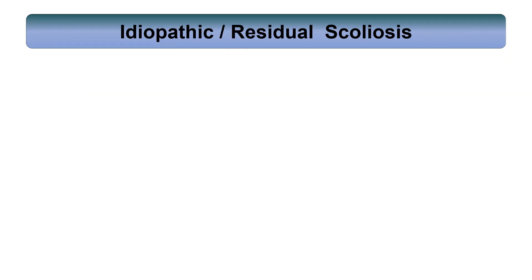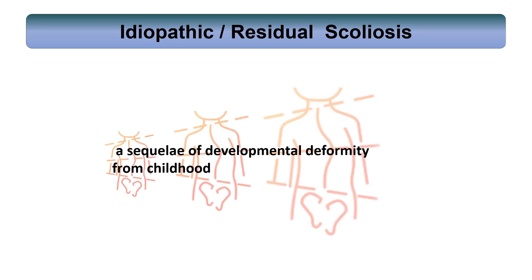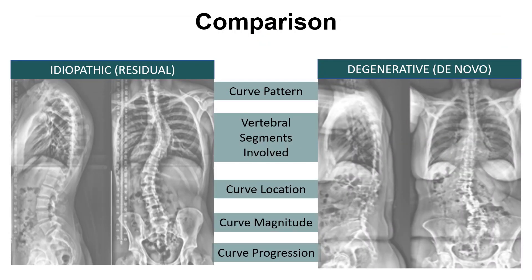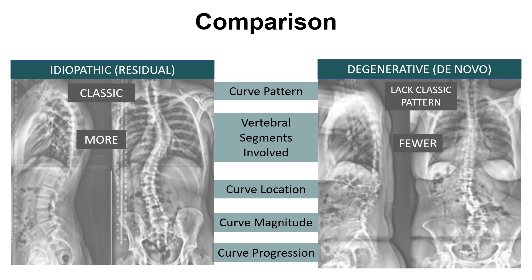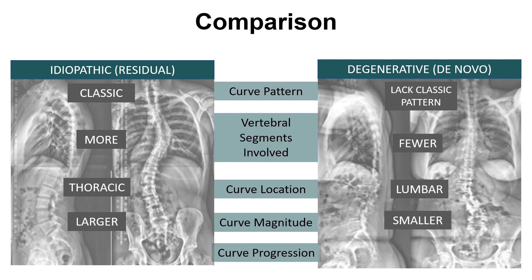Idiopathic or residual scoliosis is a long-standing deformity and sequelae of developmental deformity from childhood. While a widely accepted classic pattern is attributed to idiopathic scoliosis, the same cannot be extrapolated to de novo scoliosis. More vertebral segments are involved in residual scoliosis compared to de novo scoliosis. The thoracic spine is commonly affected in residual scoliosis, whereas de novo scoliosis is localized in the lumbar spine. Residual curves are typically of larger magnitude but progress slower compared to de novo scoliosis.